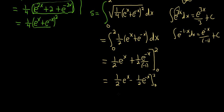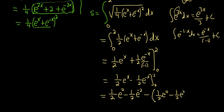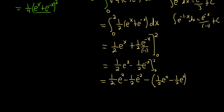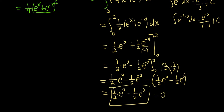Plugging in the bounds — it's important to use parentheses since there are two terms. At x equals 2: 1/2 e^2 minus 1/2 e^{-2}. Minus the value at x equals 0: (1/2 e^0 minus 1/2 e^0), which is 1/2 minus 1/2 equals 0. So the bracketed terms at 0 vanish, and the arc length s equals 1/2 e^2 minus 1/2 e^{-2}.